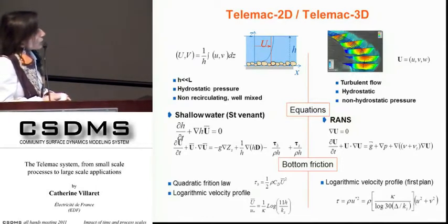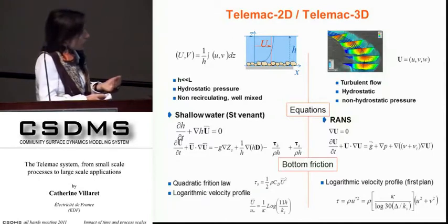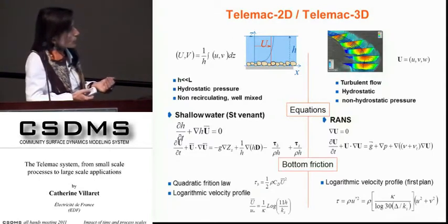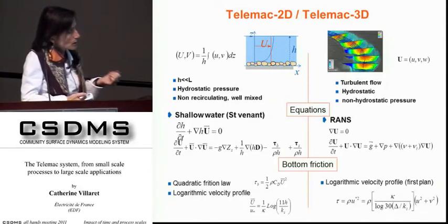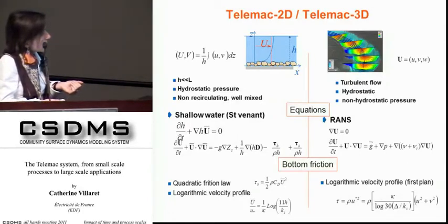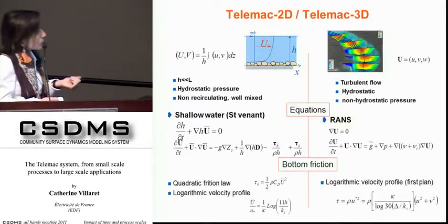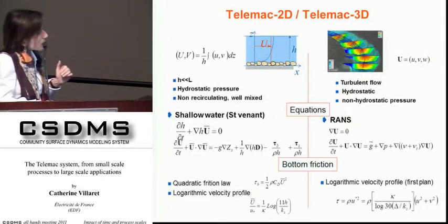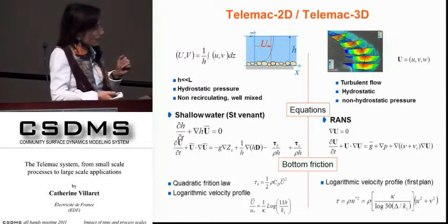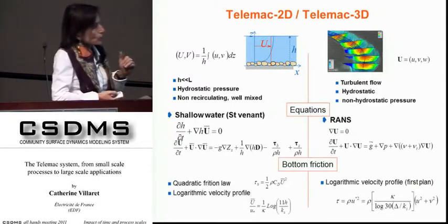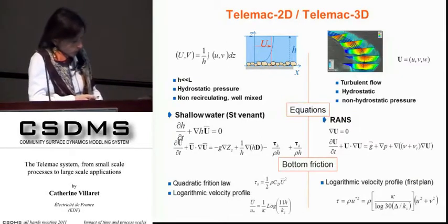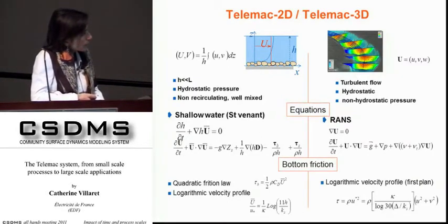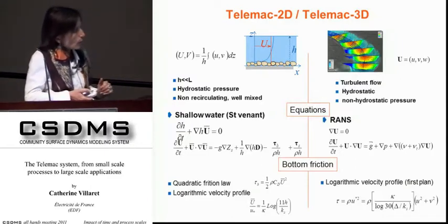In the 3D model, we solve the full Reynolds-Averaged Navier-Stokes equations, where turbulence terms appear and require a turbulence model. The difference between 2D and 3D is also in the representation of bed friction: it enters as a boundary condition in the 3D model. You no longer assume a log profile up to the surface; instead, the assumption applies only at the first elevation plane and the bed friction is related to the bottom velocity.